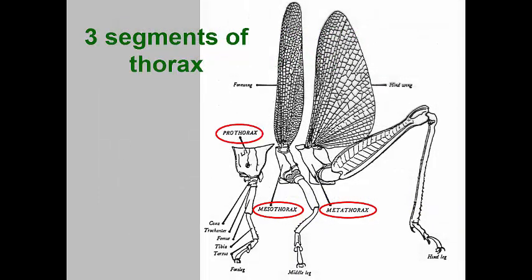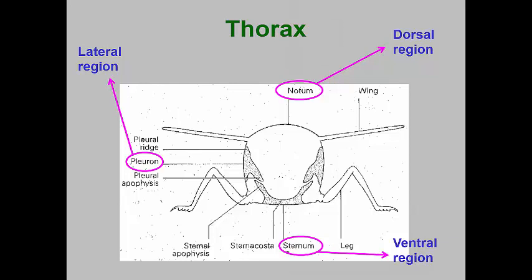Now let's move to the modifications found in the insect thorax. Remember that all insects have three original segments that make up the thoracic tagmatum: the prothorax, mesothorax, and metathorax. If we look at a cross-section of an insect thoracic box, we can see that there are basically four sides. The top plate is called a notum, or nota for plural. The side plates are called pleurons, or pleura for plural. And the ventral plate is called the sternite, or sterna for plural.